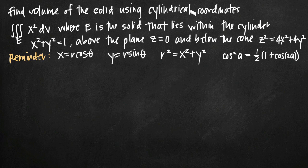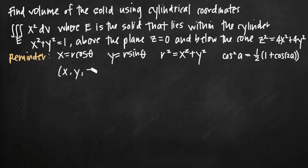Before we find the volume in cylindrical coordinates, we're going to need to set up a triple integral in cylindrical coordinates. Right now we have the triple integral of x squared dV. We're going to turn this into an iterated integral in terms of r, theta, and z. We have Cartesian coordinates x, y, z. When we convert those to cylindrical coordinates, they become r, theta, z, which is really similar to polar coordinates except we've added a third dimension z, which doesn't change across these two coordinate systems.